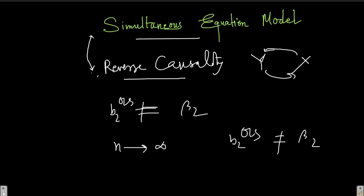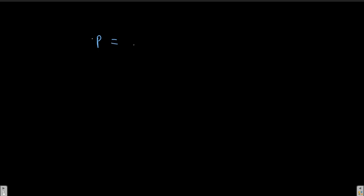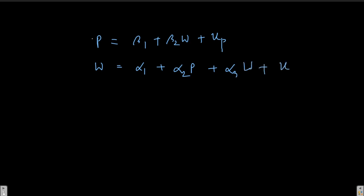When we talk about the simultaneous equation model, let me take an example. We will talk about the price rate and wage rate — I took this example from Christopher Doggett's textbook. Equation 1: price rate equals beta 1 plus beta 2 times wage rate, plus error term U_P. Equation 2: wage rate equals alpha 1 plus alpha 2 times price rate, plus alpha 3 times unemployment, plus error term U_W.